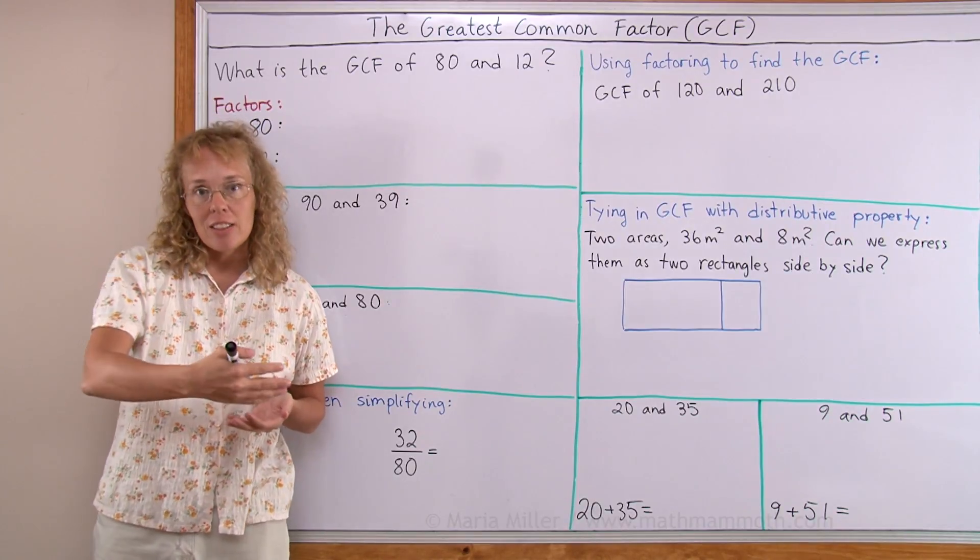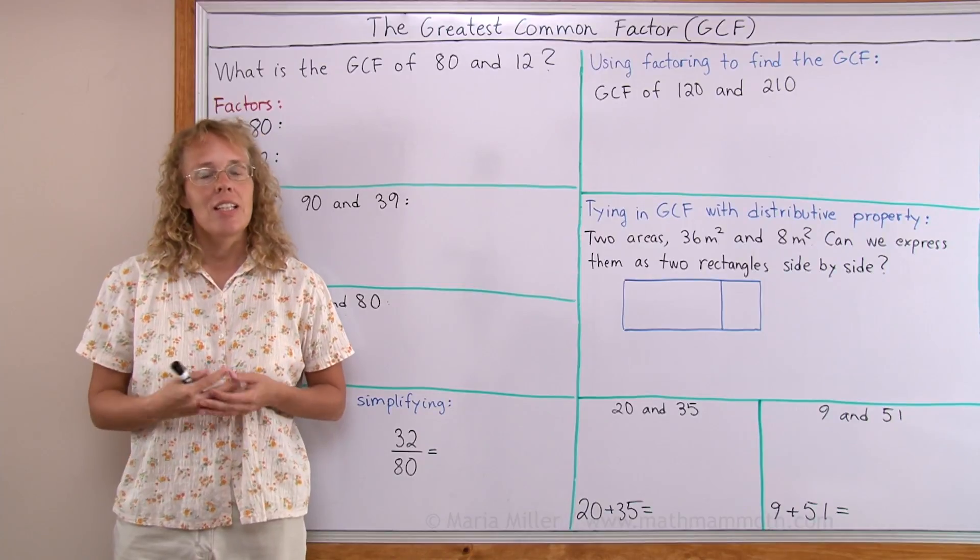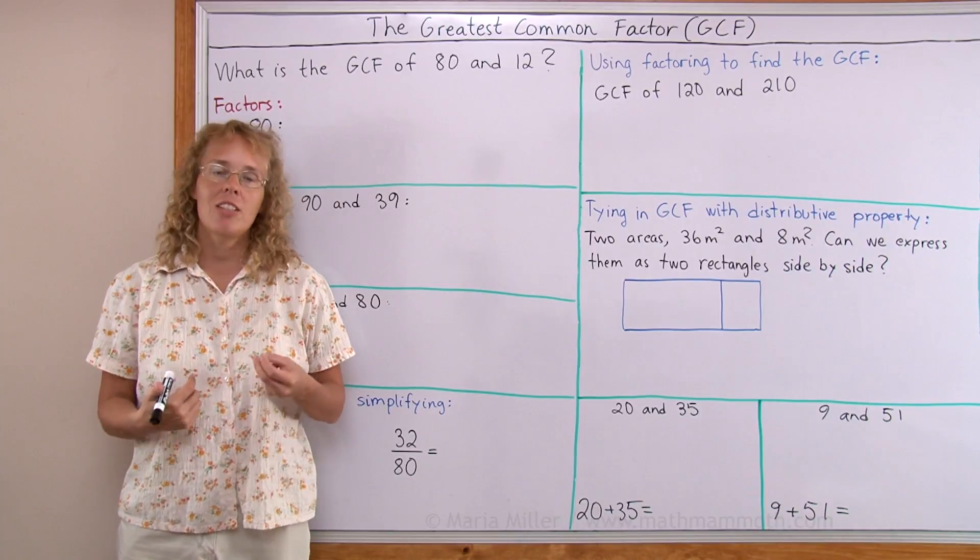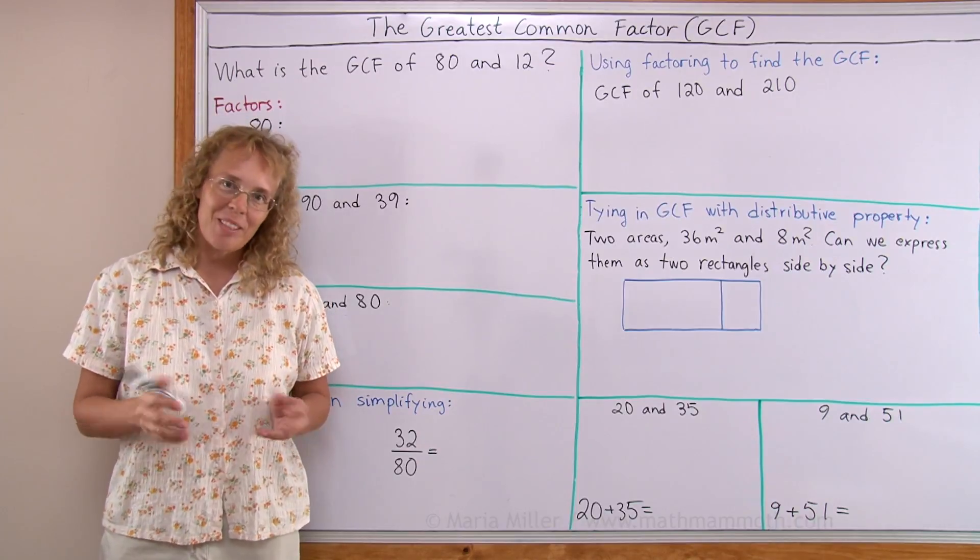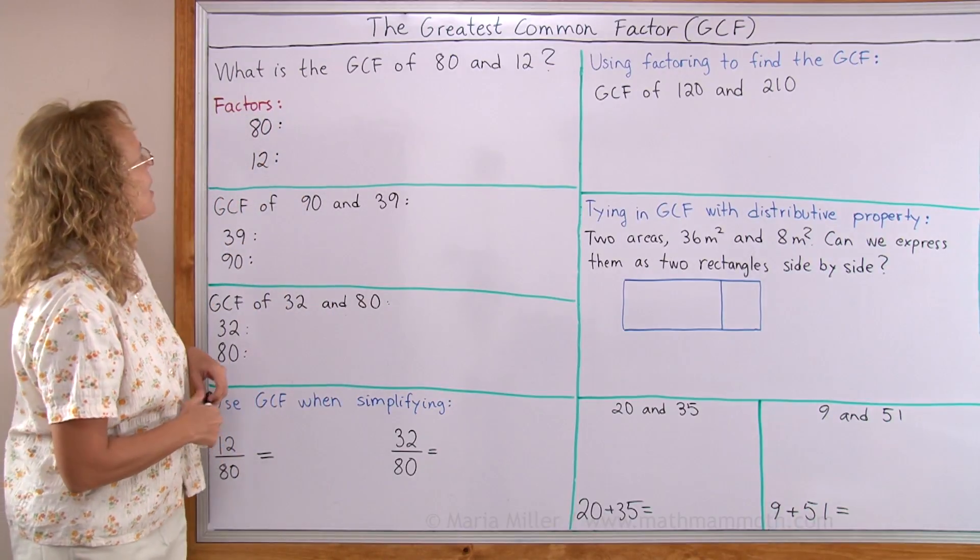First you find all the factors of those two numbers. Then you find all the common factors, the numbers that are the same, and then among those you find the greatest. Let's see an example and see how it works.